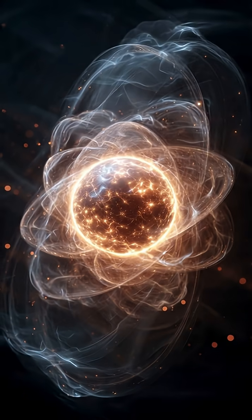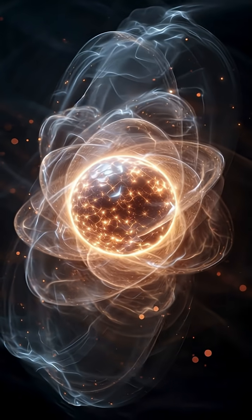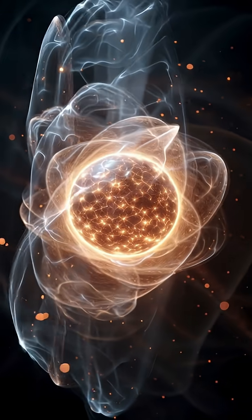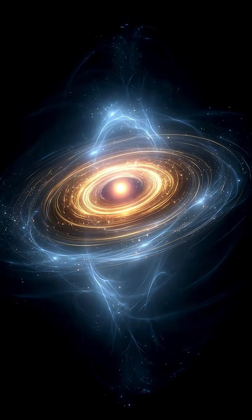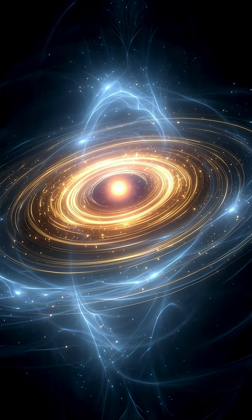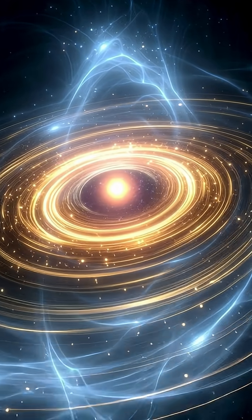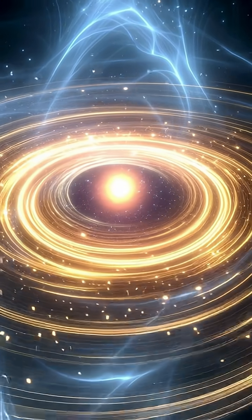On the atomic scale, electrons don't orbit like planets. They exist as clouds of probability, yet they still possess an intrinsic spin, a kind of quantum rotation that defines their very identity.